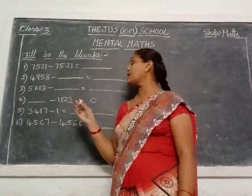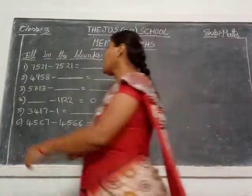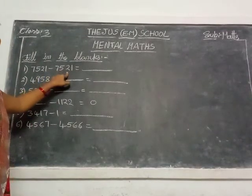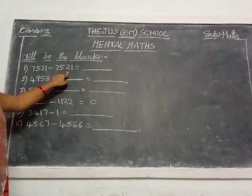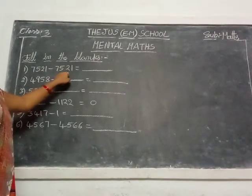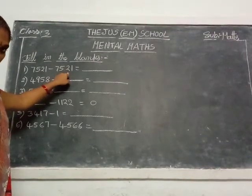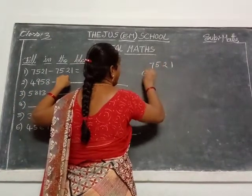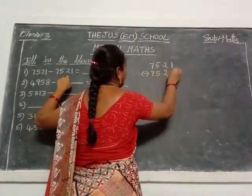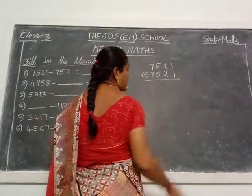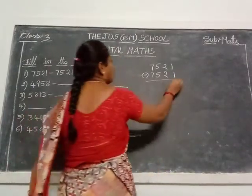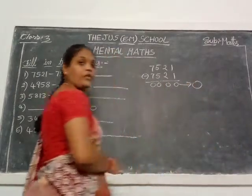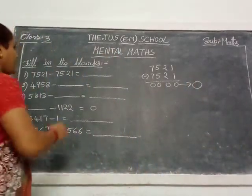Okay, which properties? Subtraction properties. See here: 7541 minus 7521. If any number is subtracted from the same number, the answer is 0. See, 7521 minus 7521: 1 minus 1 is 0, so totally 0. Already explained that children, the property.